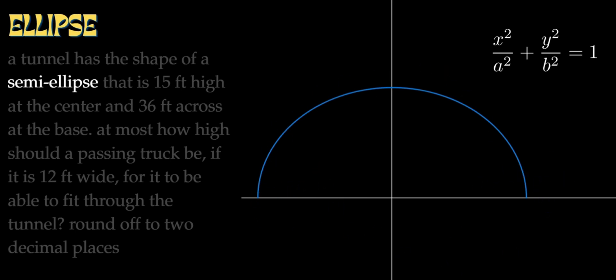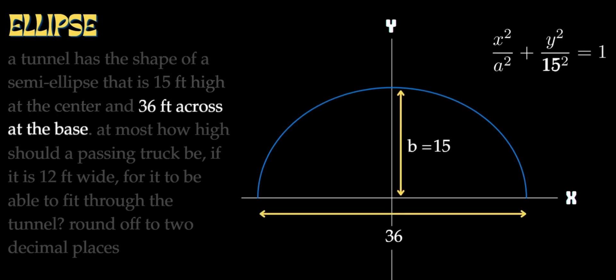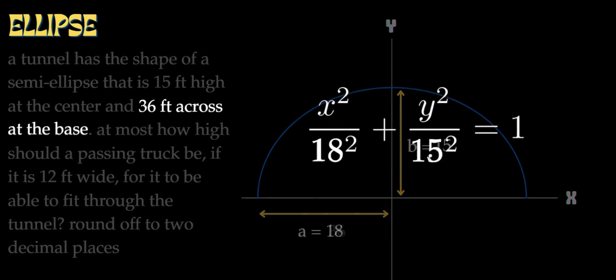The tunnel is shaped like an ellipse. It is 15 feet higher at the center, and 36 feet wide at the base. As you can see, it is 36 feet wide at the base, so the half-width is 18 feet. There is an area at the base of 18 on each side.